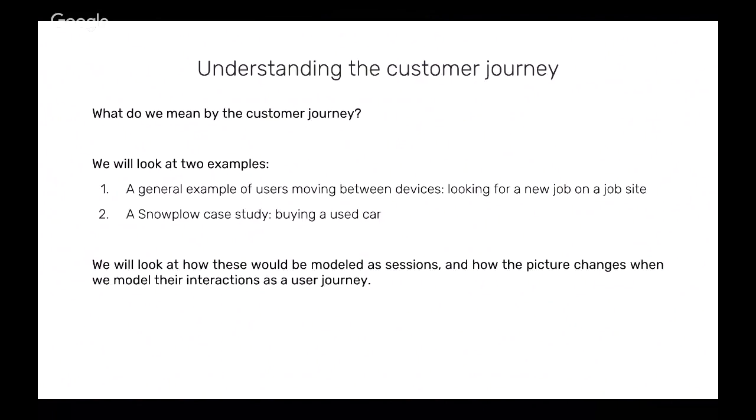To go into this with two examples: first, a general example of users moving between devices — someone looking for a job on a job site using a couple of different devices. Then we'll look more specifically at a Snowplow case study, something we've implemented recently with one of our customers, to see how your understanding of your users can change when you're able to model the data in a way that makes sense for your business case — and when you have the underlying data available.